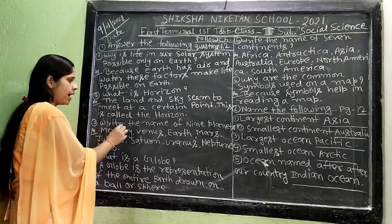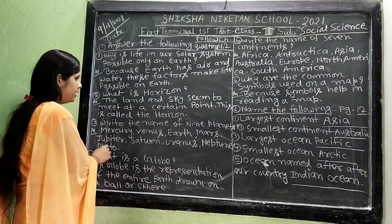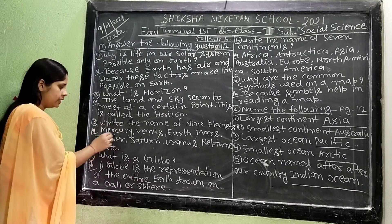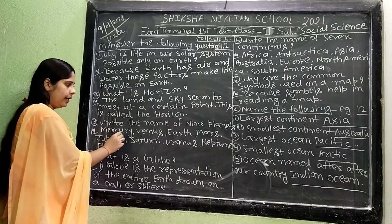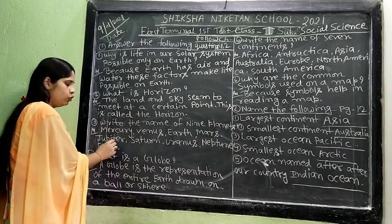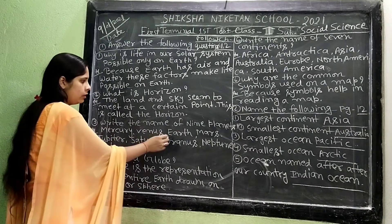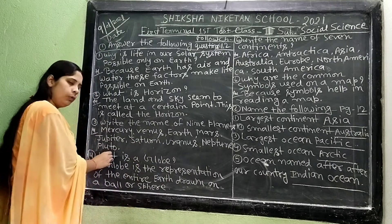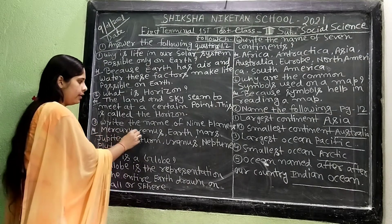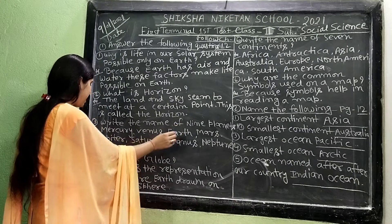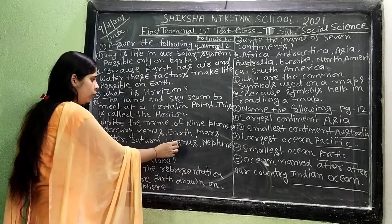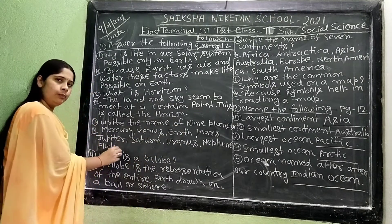Question number 3: Write the names of the 9 planets. Answer: Mercury, Venus, Earth, Mars, Jupiter, Saturn, Uranus, Neptune, and Pluto.